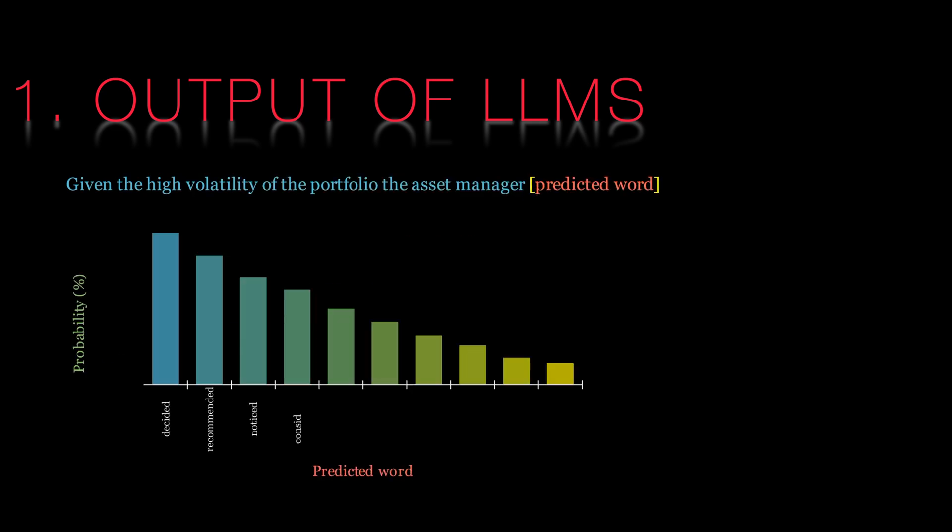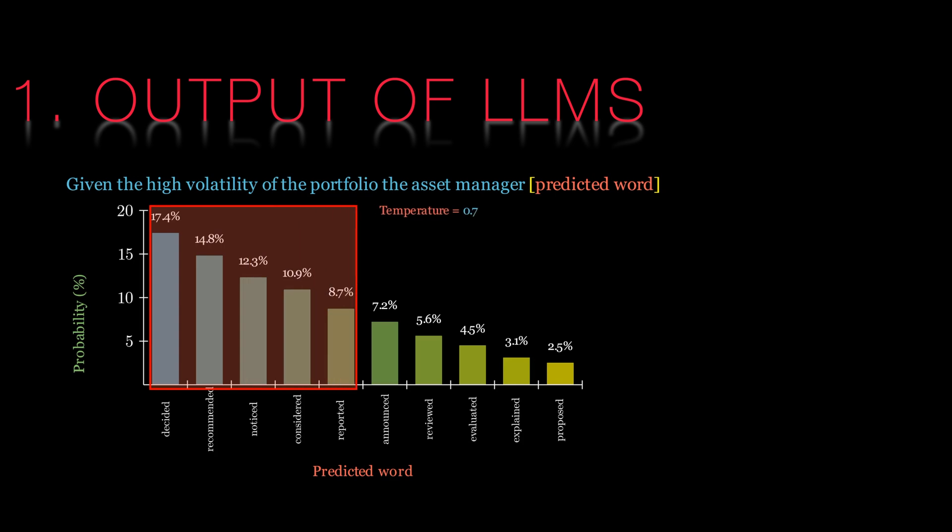Let's dive right in. The three steps we'll discuss are: one, what is the actual output of LLMs like ChatGPT, Mistral, Claude, or Gemini? As we shall see, it's a probability distribution of the next most likely word or token. Simply stated, what is the next most likely word?